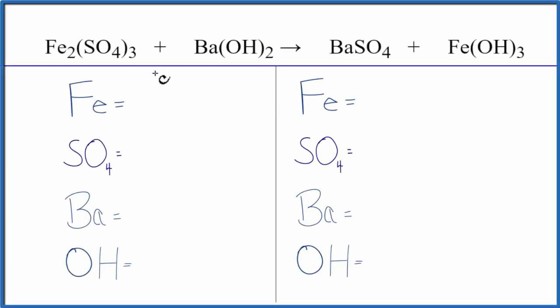To balance this double displacement reaction, iron 3 sulfate plus barium hydroxide, we'll count the atoms up on each side of the equation. We'll use a little bit of a trick here to make that a lot easier.